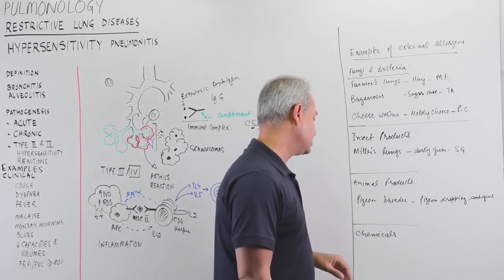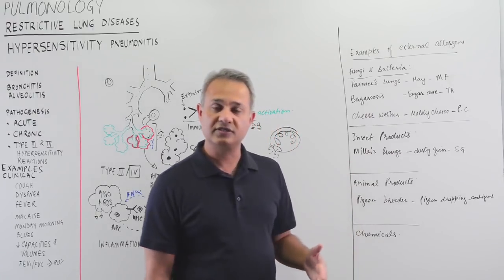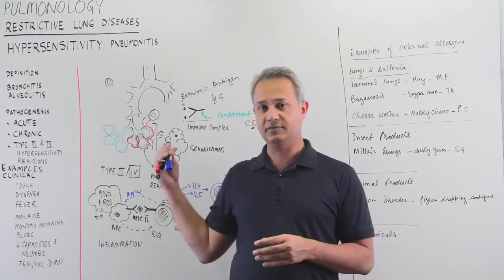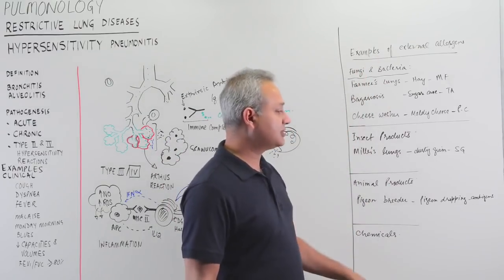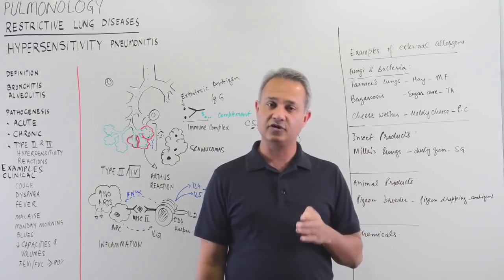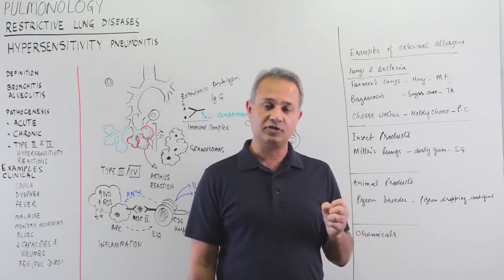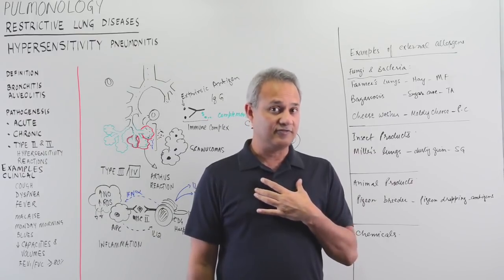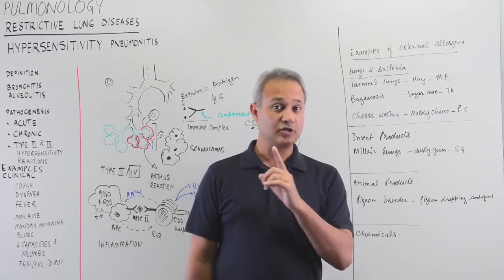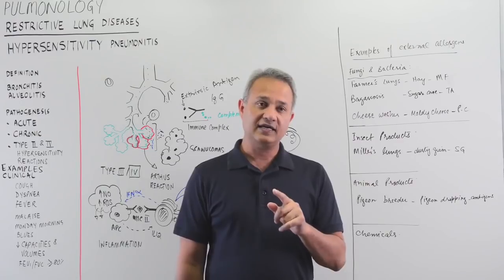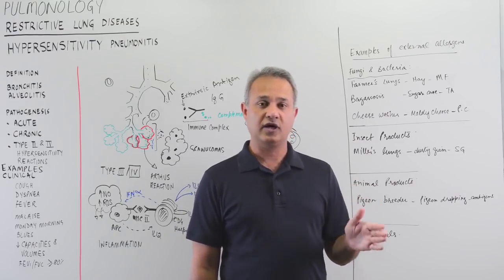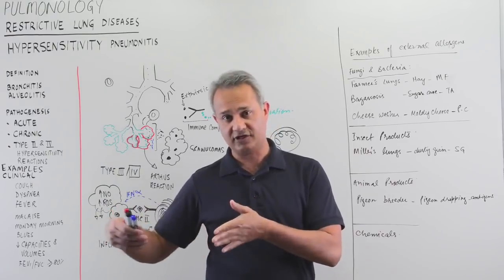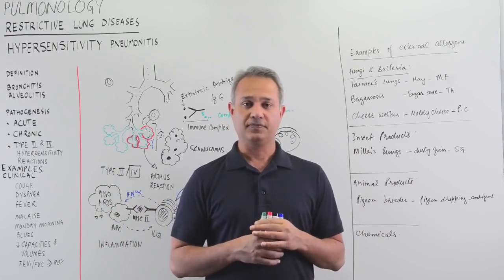Chemical industry workers can also develop similar problems. In clinical history, when a patient presents with chronic or acute cough with restrictive — not obstructive — symptoms, always ask what industry they work or have worked in. This is key to identifying the extrinsic antigen responsible.